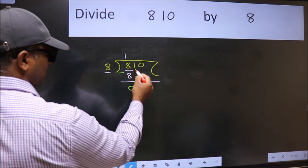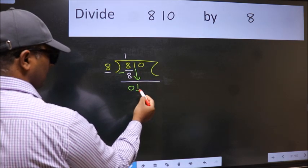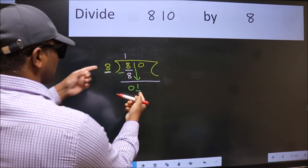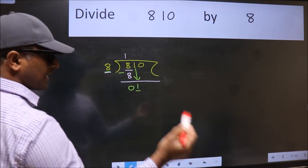After this, bring down the beside number. So 1 down. Now here we have 1 and here 8. 1 is smaller than 8. So we should bring down the second number.